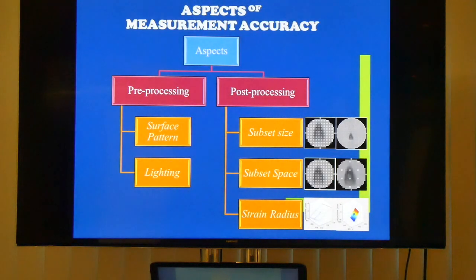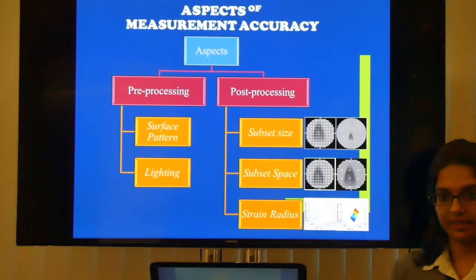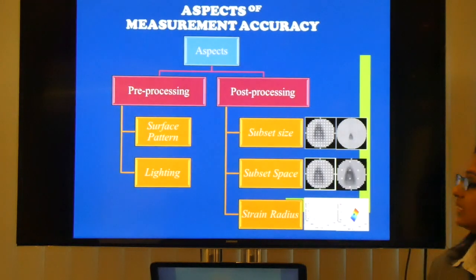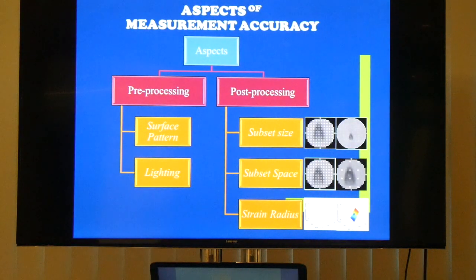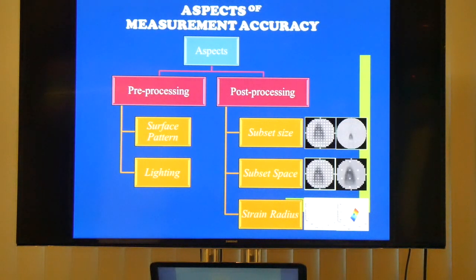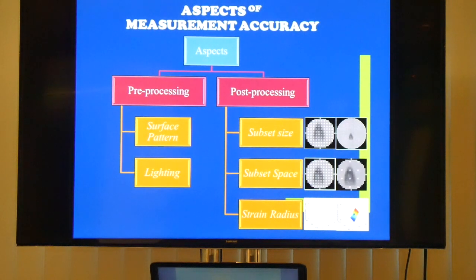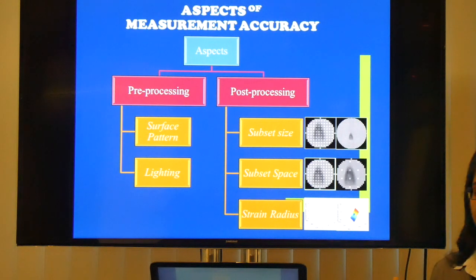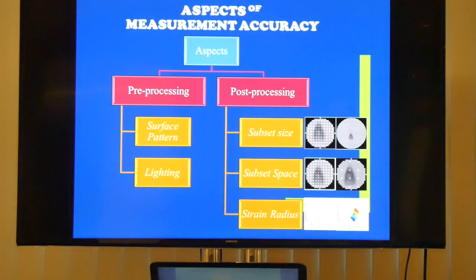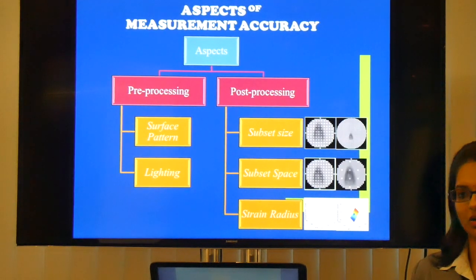There are many aspects that affect the measurement accuracy. I have detailed five, characterized as pre-processing and post-processing. Pre-processing relates to the experimental setup, and post-processing relates to selecting the DIC parameters. For pre-processing, surface pattern is very important because DIC works by tracking and matching. For this film blowing process, the film doesn't have any natural features to track, so a surface pattern must be artificially created — it can be dots, lines, or any random pattern. The second pre-processing factor is lighting: a small variation in lighting will cause error in the DIC result, so the sample should be illuminated with consistent lighting throughout the deformation process.